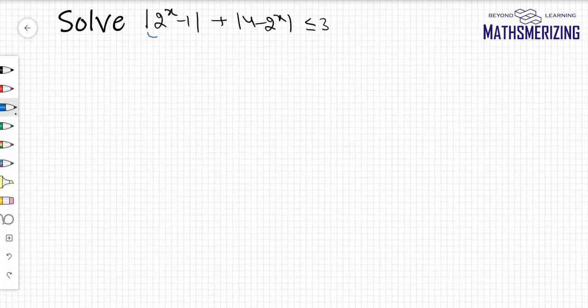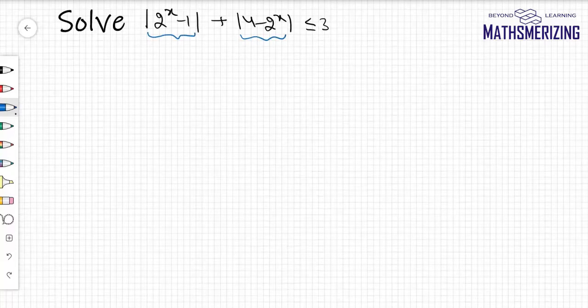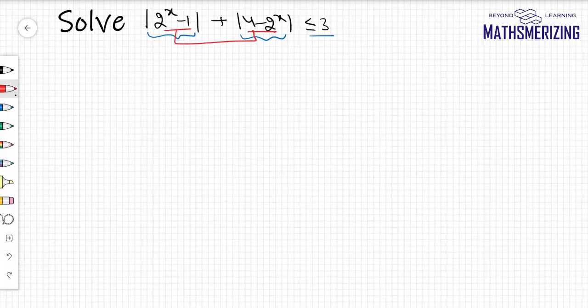The question is |2^x - 1| + |4 - 2^x| ≤ 3. Now what I see in this question is if I'm going to add these two, so I'll get 3.